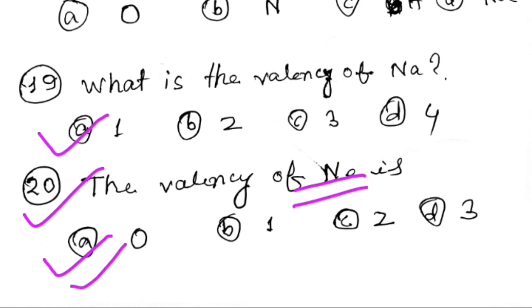If you go to the valency of hydrogen, how do you find the whole electronic configuration of carbon?